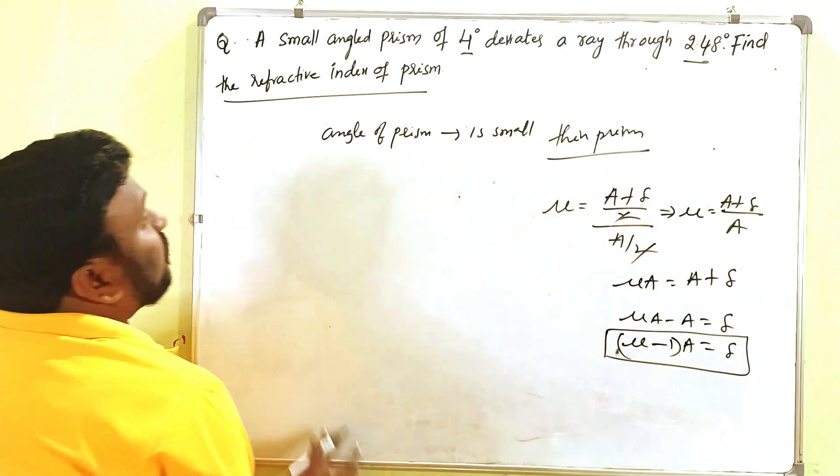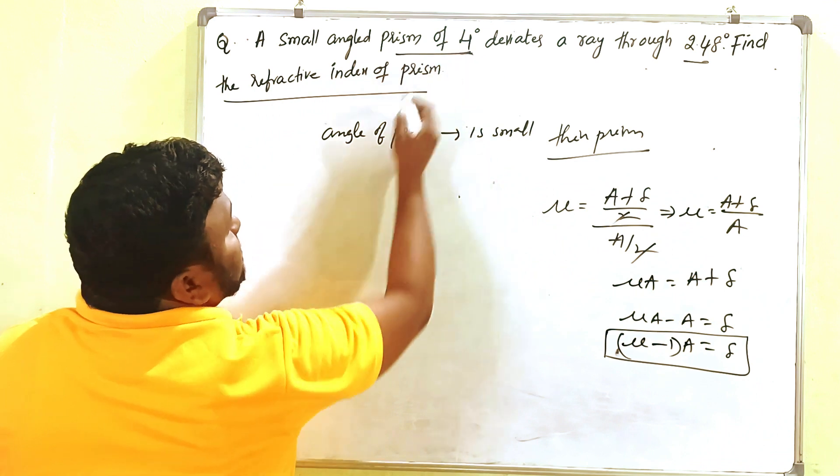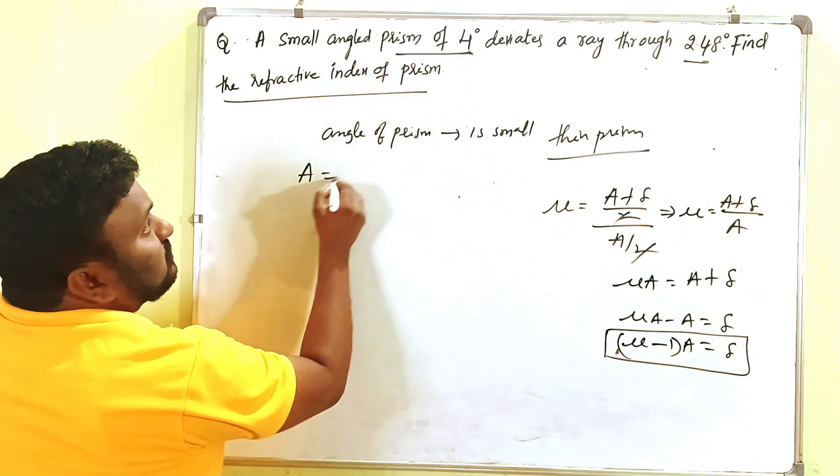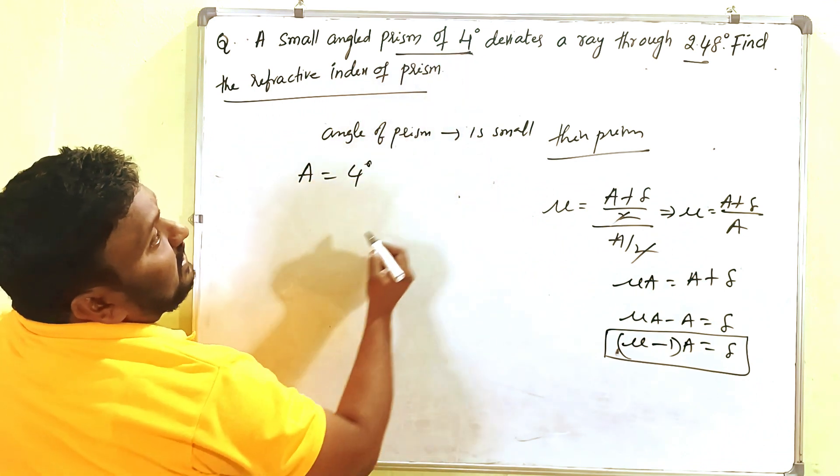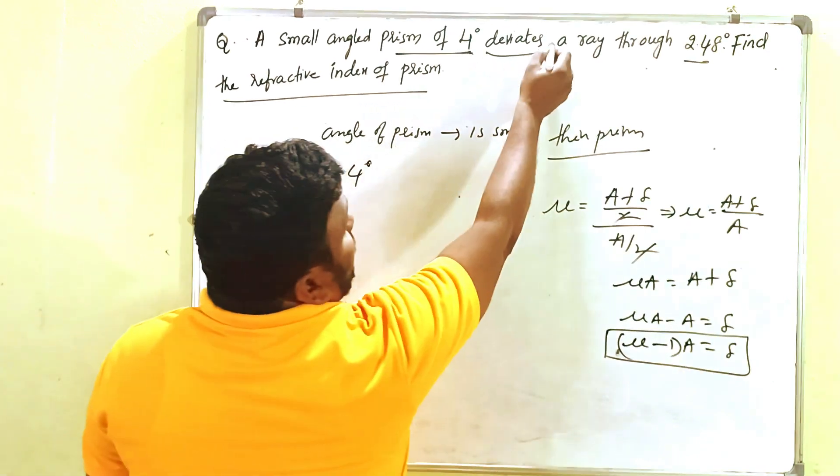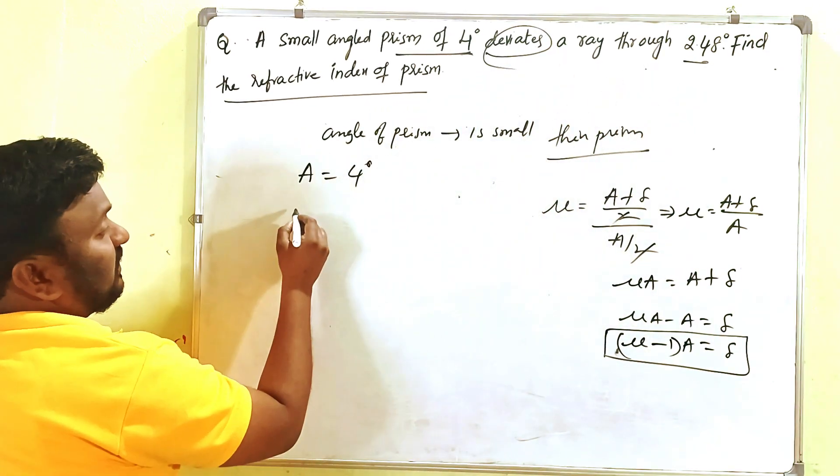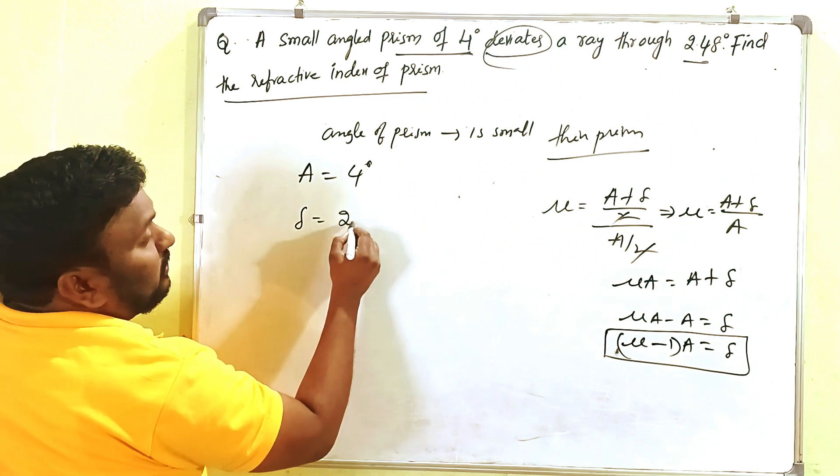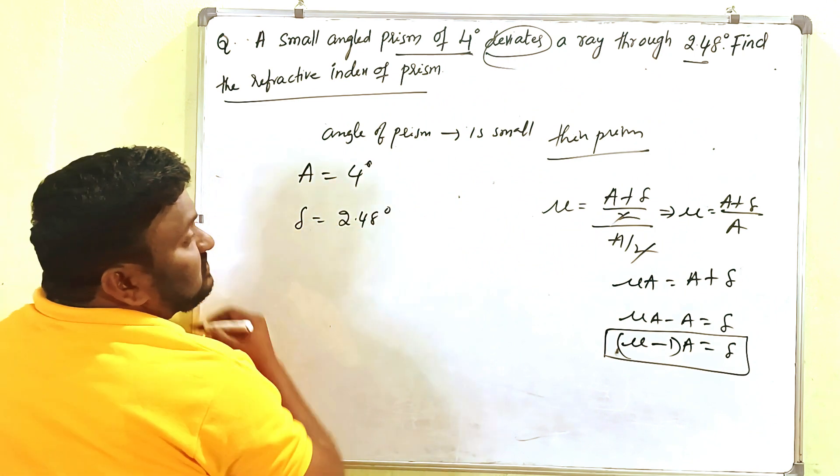Now, what is given in the problem? A is equal to 4 degrees, and the angle of deviation is 2.48 degrees. Then what you have to find: we have to find the refractive index.